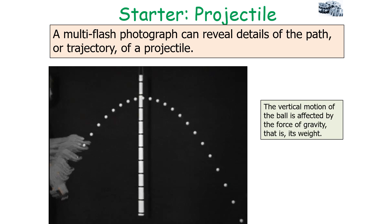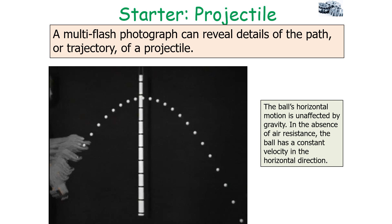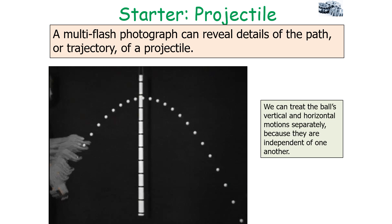The vertical motion of the ball is affected by the force of gravity — its weight. When it rises it has a vertical deceleration of magnitude g, which slows it down, and when it falls there is an acceleration of g which speeds it up. The ball's horizontal motion is unaffected by gravity, and in the absence of air resistance the ball has a constant velocity in the horizontal direction. We can treat the vertical and horizontal motion separately because they are independent — they are at 90 degrees, or perpendicular, to each other.